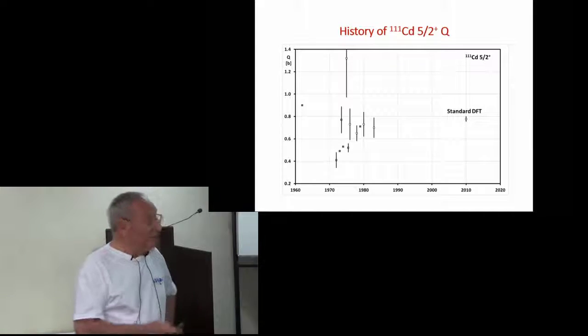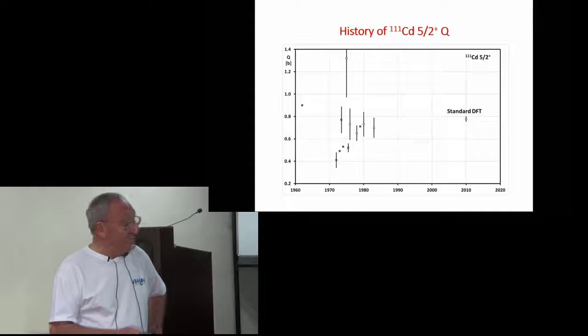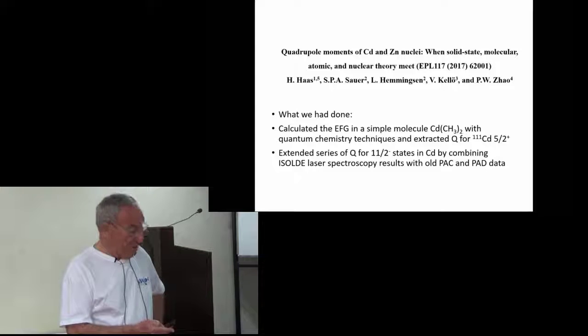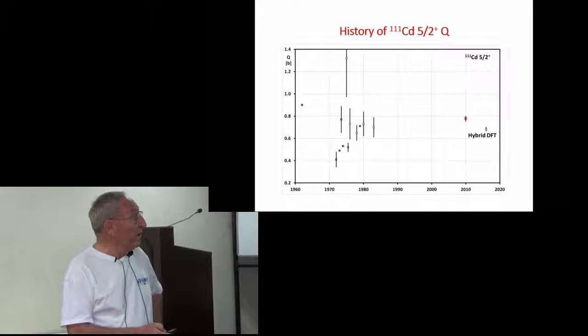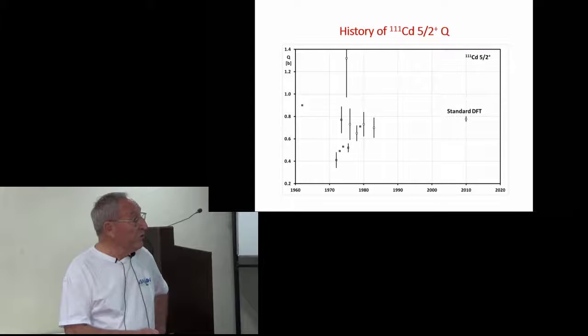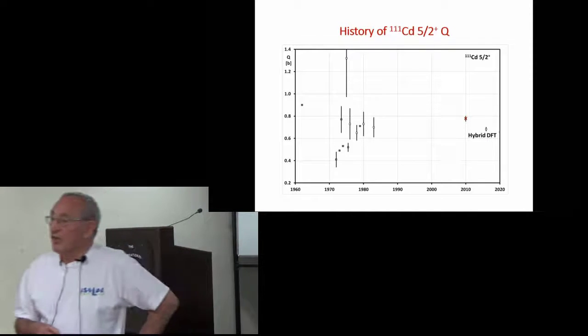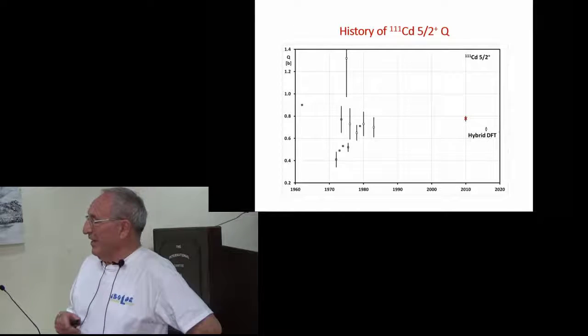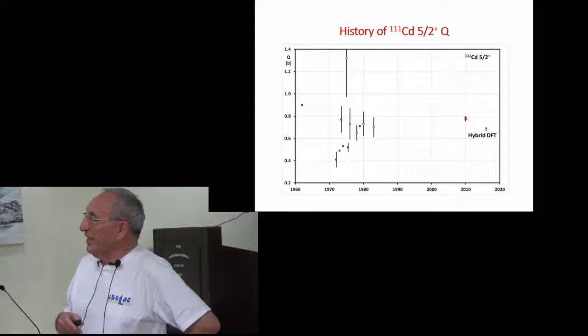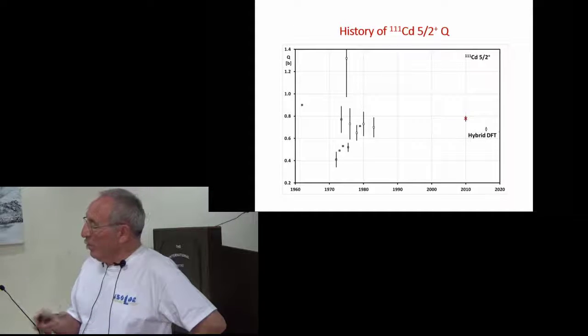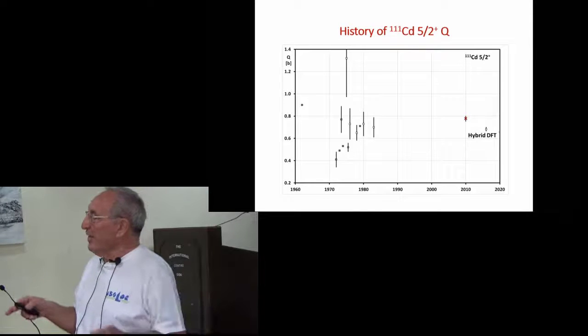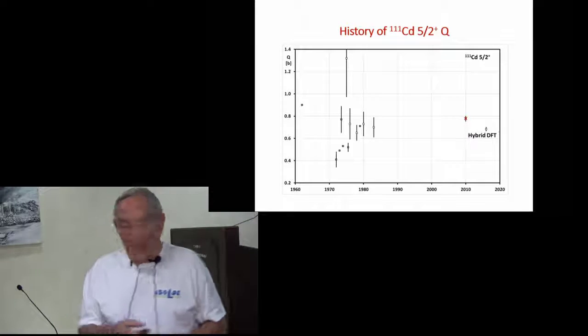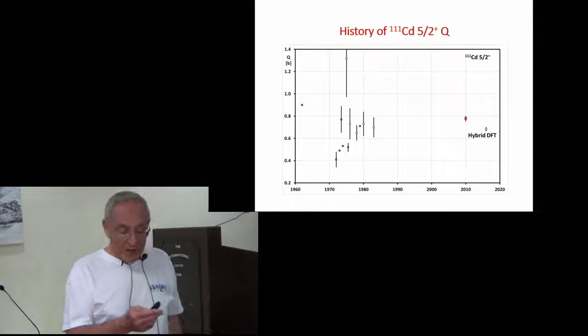So then some problems came up with this, and we used hybrid density function theory, which was supposed to be more accurate. And it turned out in the condensed matter cases of cadmium, it changed the calculated field gradient by quite a lot. And we were more confident at the time, comparing with other cases of solids where quadrupole moments are known, that we were a lot better.